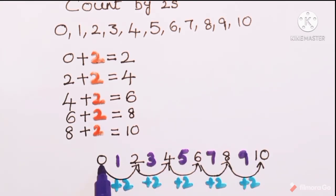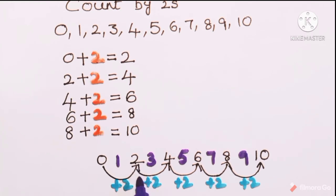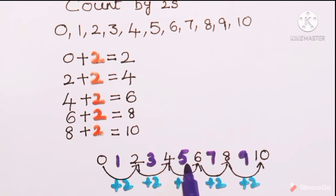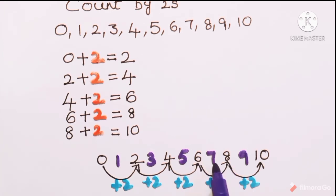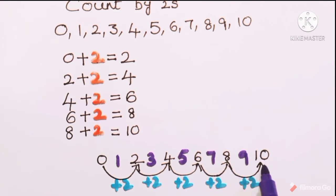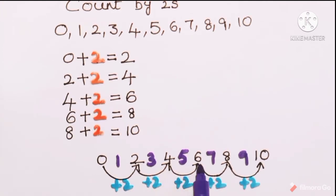We jump from 0 to 2 by skipping 1. We jump from 2 to 4 by skipping 3. We jump from 4 to 6 by skipping 5. We jump from 6 to 8 by skipping 7. We jump from 8 to 10 by skipping 9. So in skip counting by twos we skip one number during each jump.